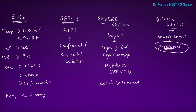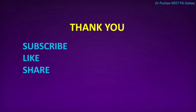So this is a short discussion on sepsis steps, which includes SIRS, sepsis, severe sepsis, and septic shock. You should remember the criteria and the difference between all these four. If you like this video, please click the like button and share this video with your friends, and subscribe to my YouTube channel for more videos. Thank you.